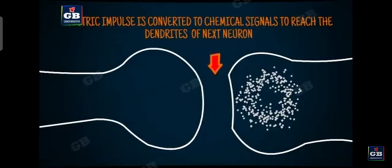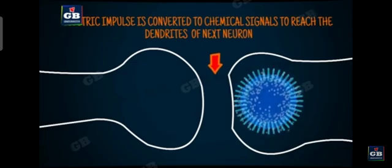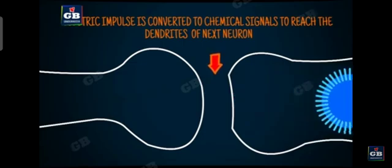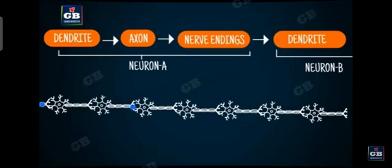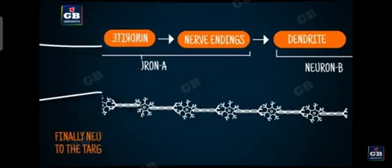There, they create a similar electrical impulse. When these chemicals reach the dendrite of the next neuron, a similar electric impulse is created. This electrical impulse passes from the dendrite to the axon. Again, it travels throughout the axon and finally reaches the nerve endings.